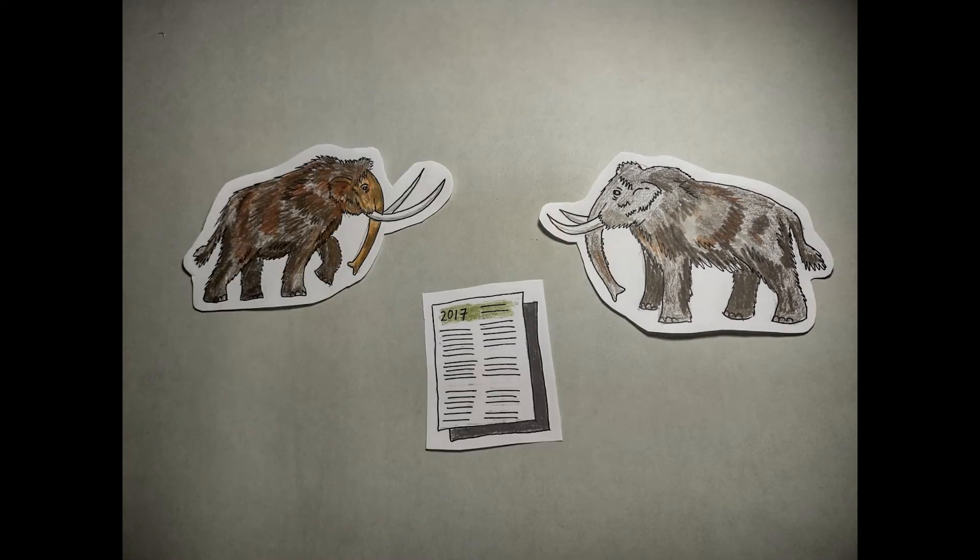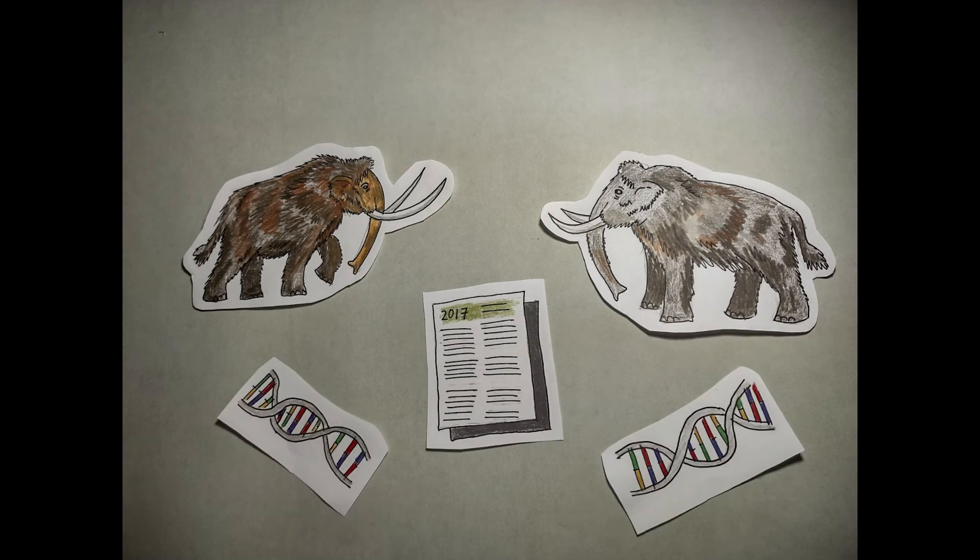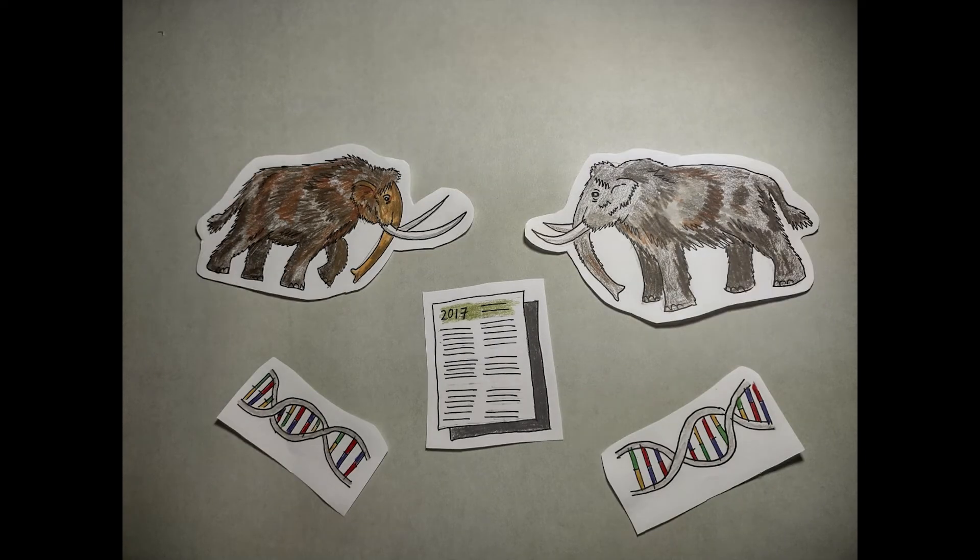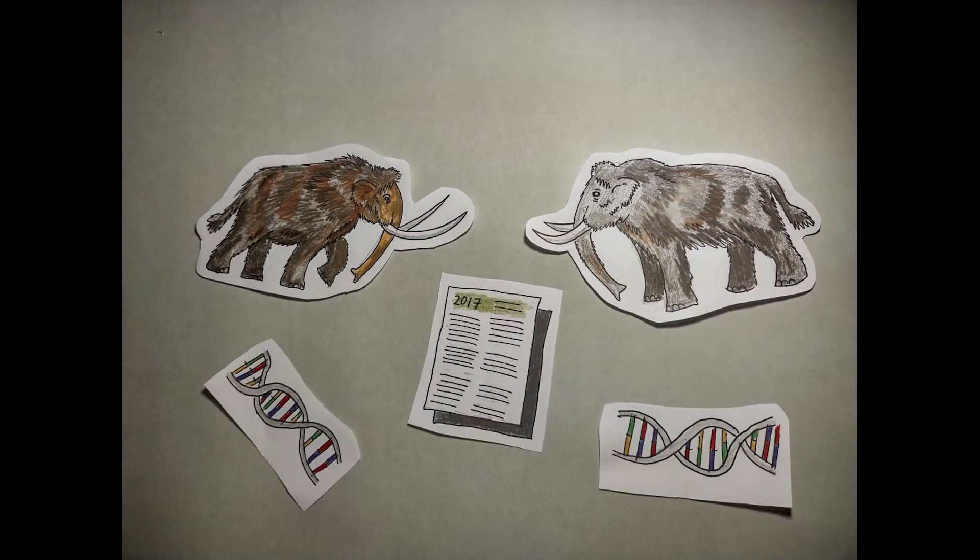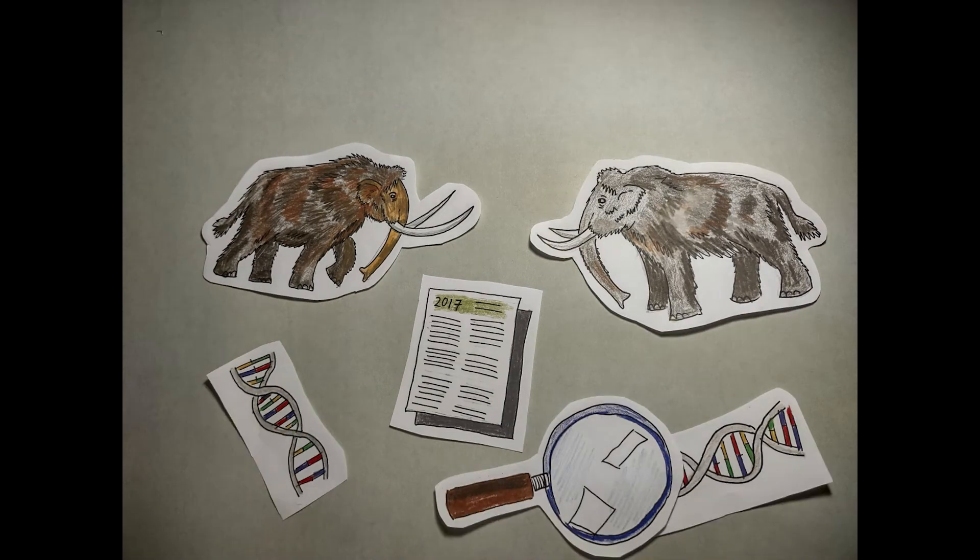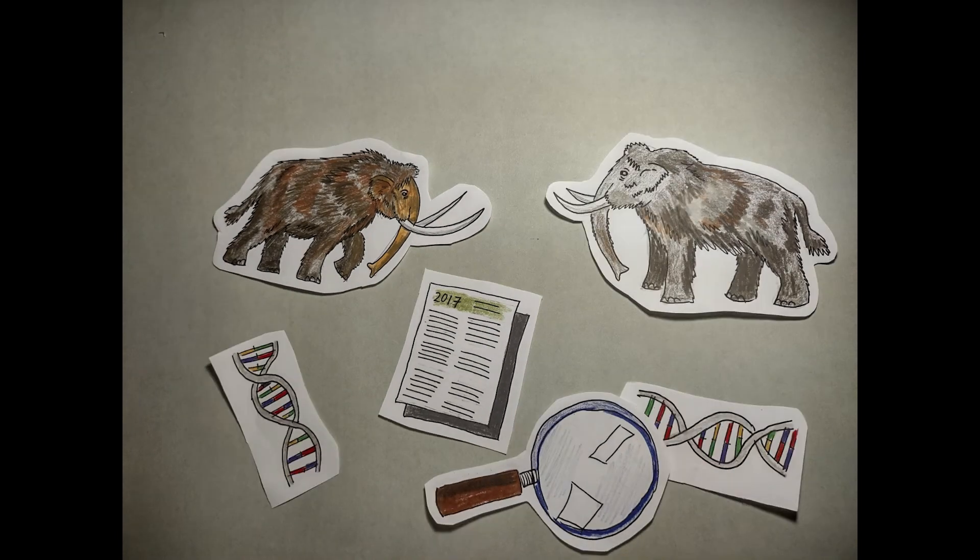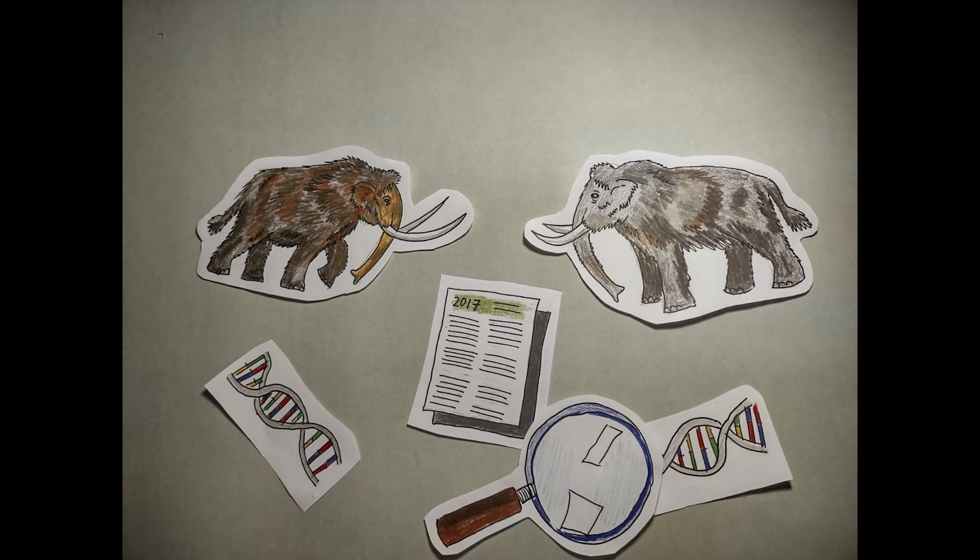A 2017 paper by Rebecca Rogers and Montgomery Slatkin has used the same two genomic sequences from our focused study. When examining the more recently living Wrangell island mammoth, it was found that the population bottleneck has resulted in an accumulation of deleterious mutations in the genome.